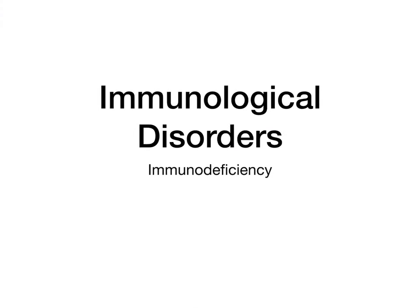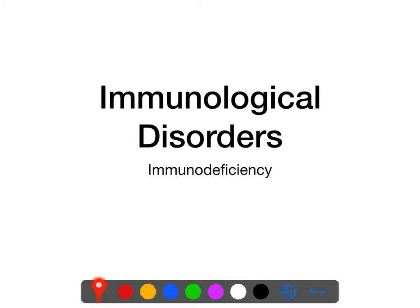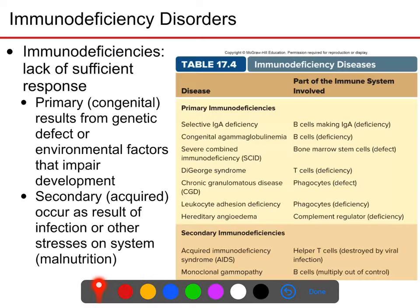The last of our three immunological disorders is immunodeficiency. In an immunodeficiency, your immune system does not respond appropriately — it's not over-responding as in a hyperactivity, it's not responding to the wrong thing as in an autoimmune disorder; it's just not responding.